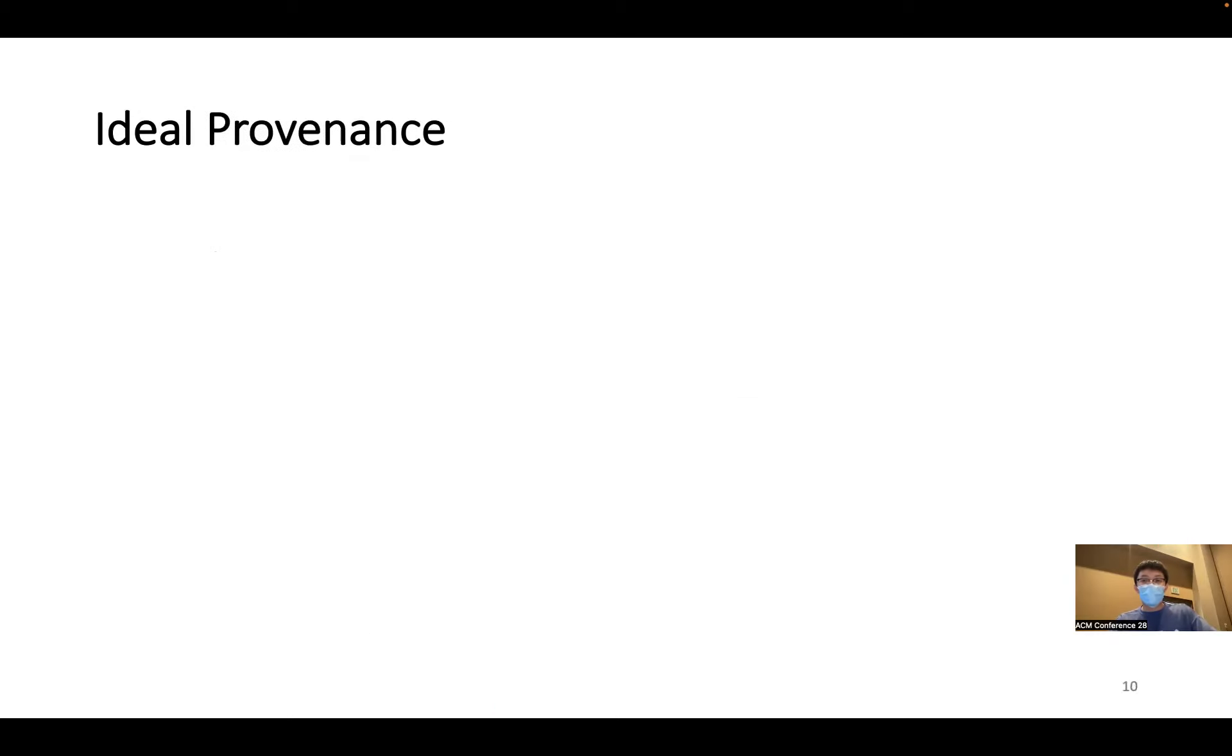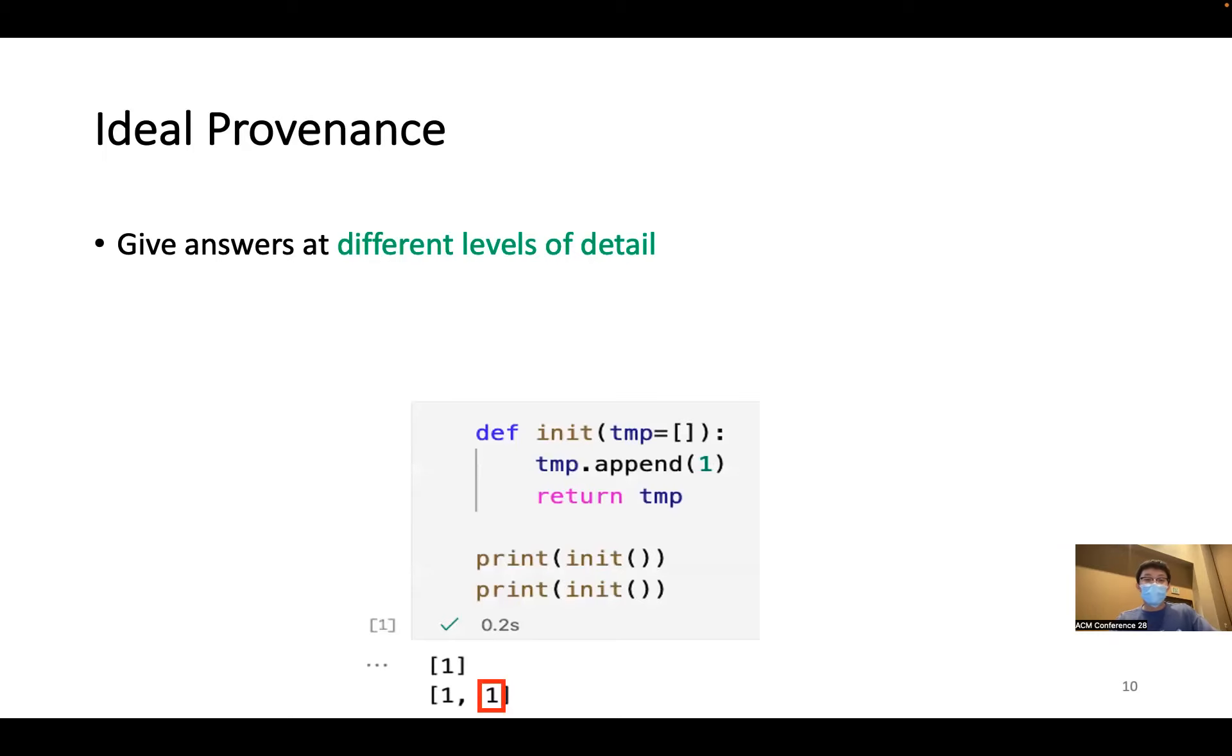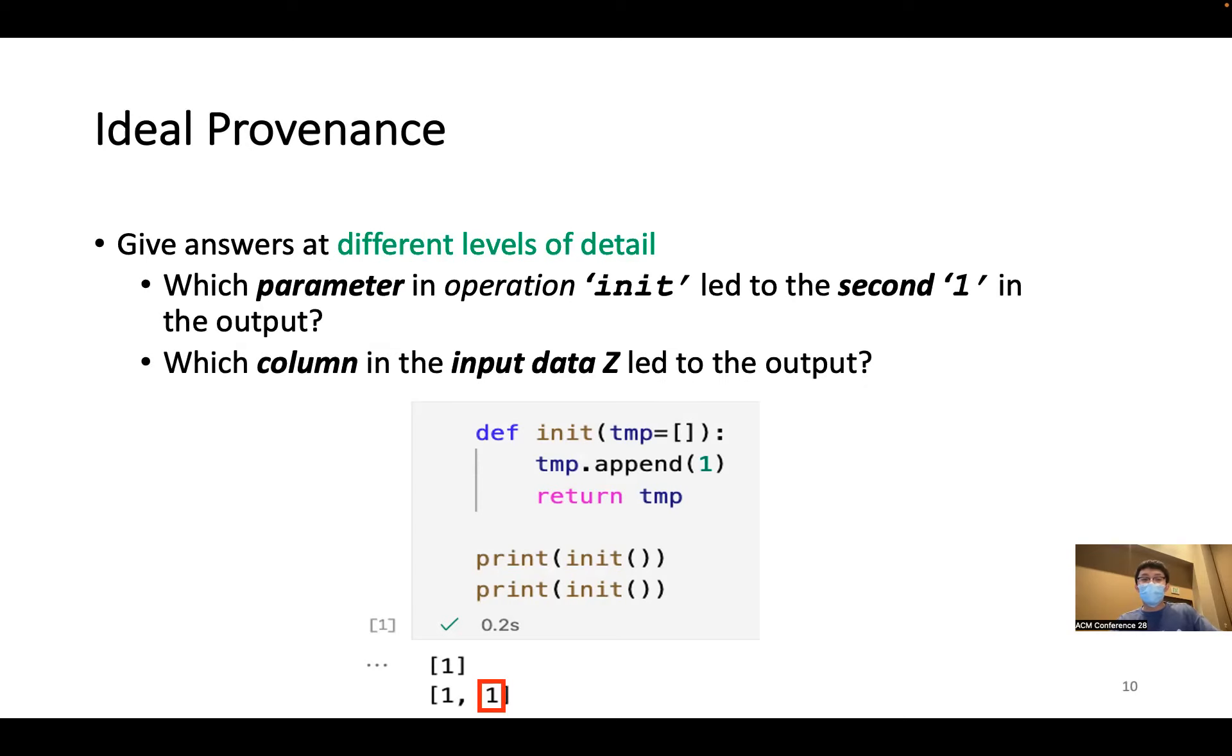Beyond just giving high-level answers, ideal provenance should be also able to answer questions at different levels of detail. For example, for this snippet again, one might ask more detailed questions like which parameter in the operation init actually led to the second one in the output. Or someone might ask another data question, which is which column in the input data file led to the output. In general, this ability is very crucial when the user is trying to narrow down which part of data is actually problematic. Or maybe the user is certain that he's using a correct operator, but just not sure which part or which parameter triggered a bug.